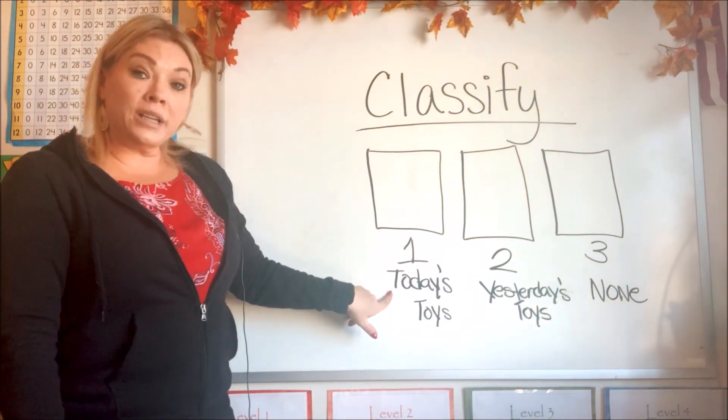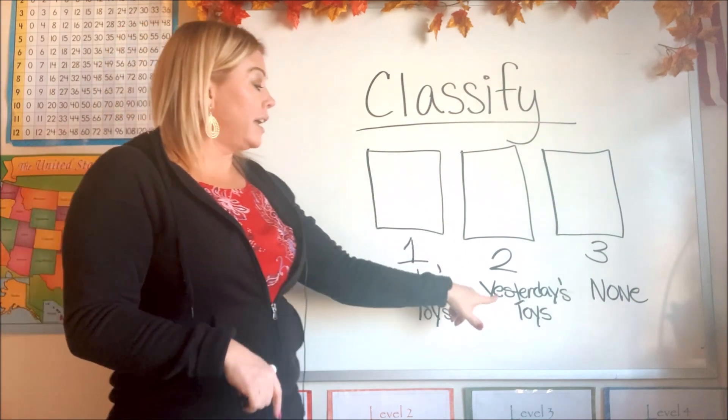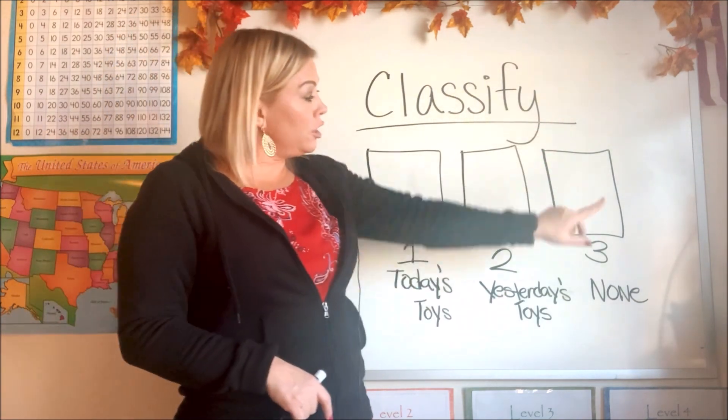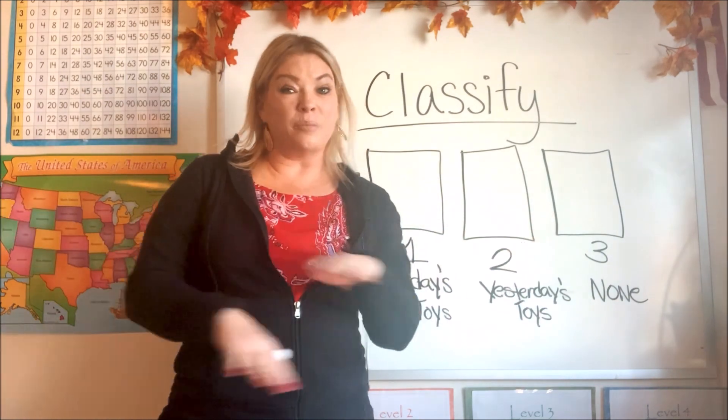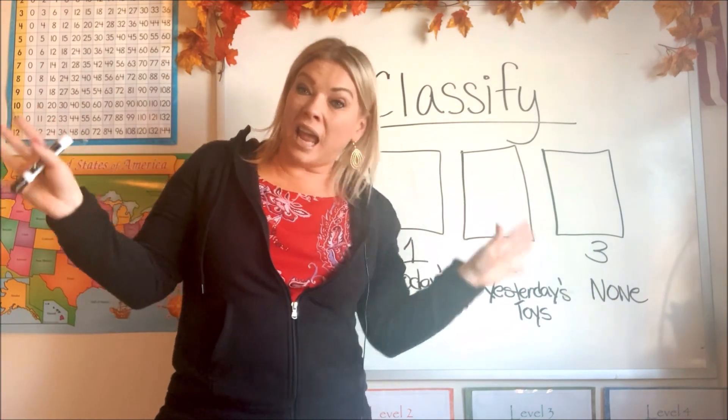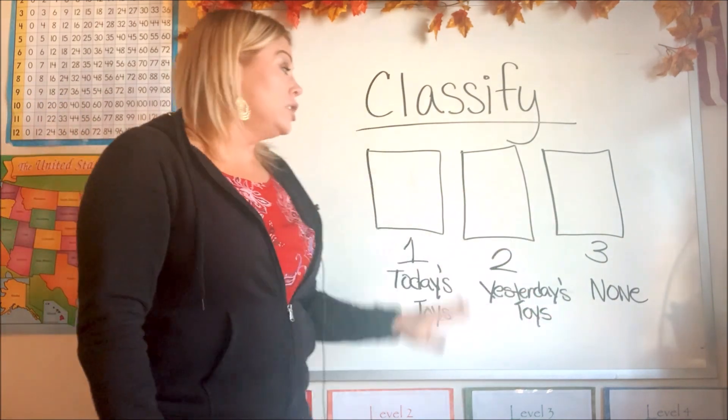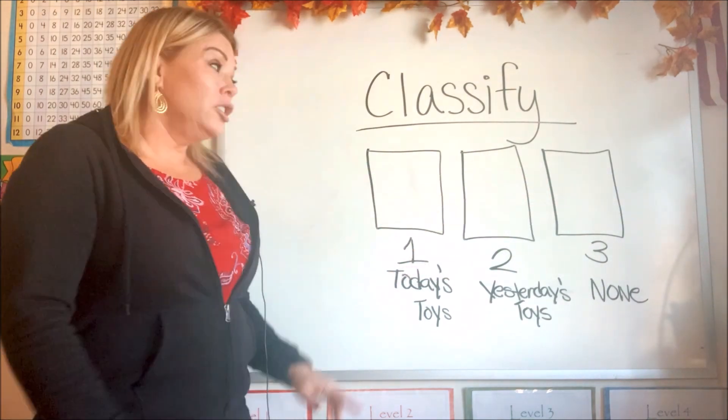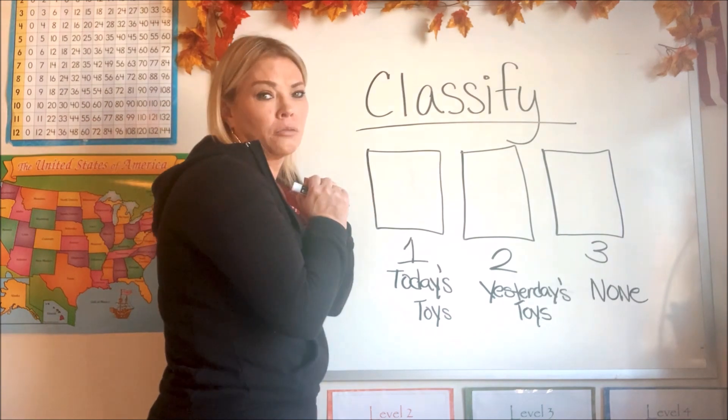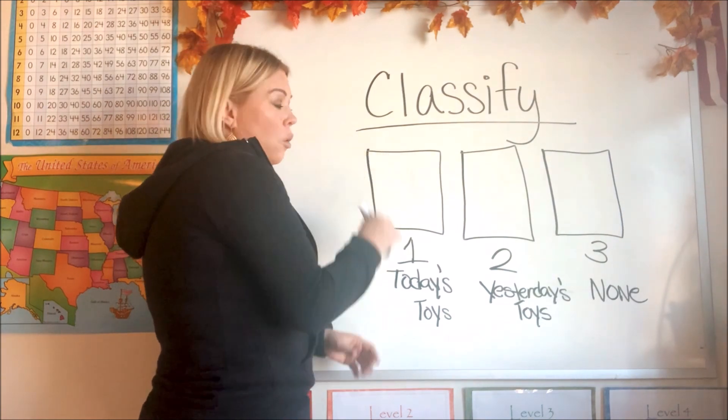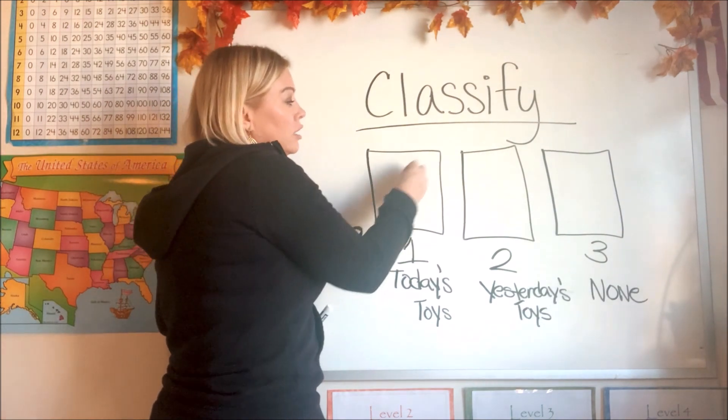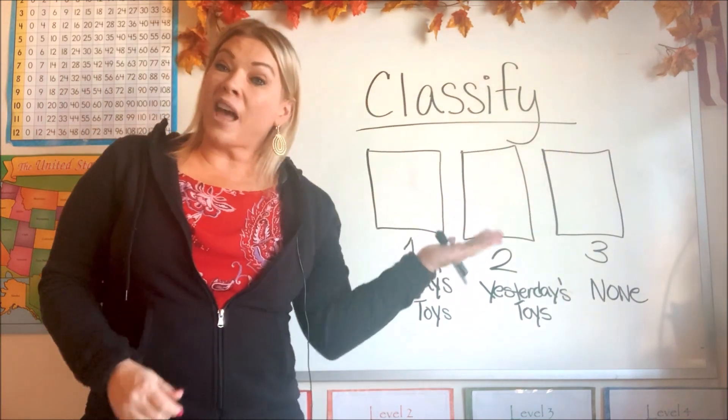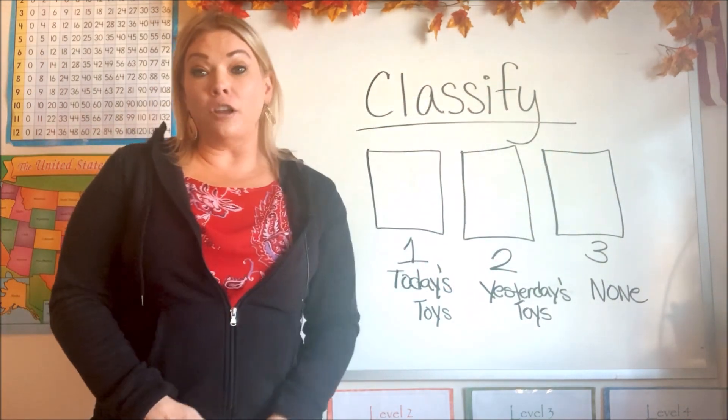The first one is toys that you played with today. The second is toys that you played with yesterday. And the third group is neither of them, none. You didn't play with them today or yesterday. So you would put your toys in one of each group, right? You can't put a toy in both groups, can you? No, because it's just one toy. So each toy has to go into one group. And that would be how you classify your toys.